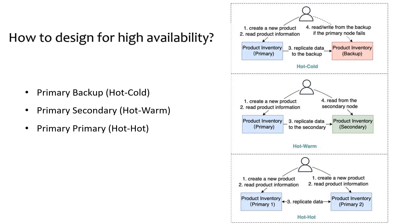The third option is primary-primary: both nodes act as primary nodes and can handle read and write operations, with data replicated between the two nodes. This architecture increases throughput, but it has limited use cases. For example, if both nodes need to be updated at the same time for the same product, the final state might be unpredictable.